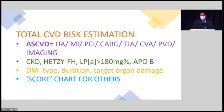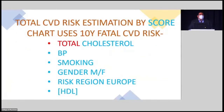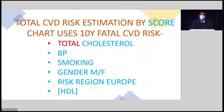Other categories depend on the type, duration, and target organ damage of diabetes. For those without any of these, there is a SCORE chart — designed for European populations. For Sri Lanka we use the WHO/CIND Southeast Asian category, though both cannot be fully combined scientifically. The SCORE chart provides the 10-year fatal cardiovascular disease risk based on total cholesterol, blood pressure, smoking status, gender, risk region in Europe, and HDL.